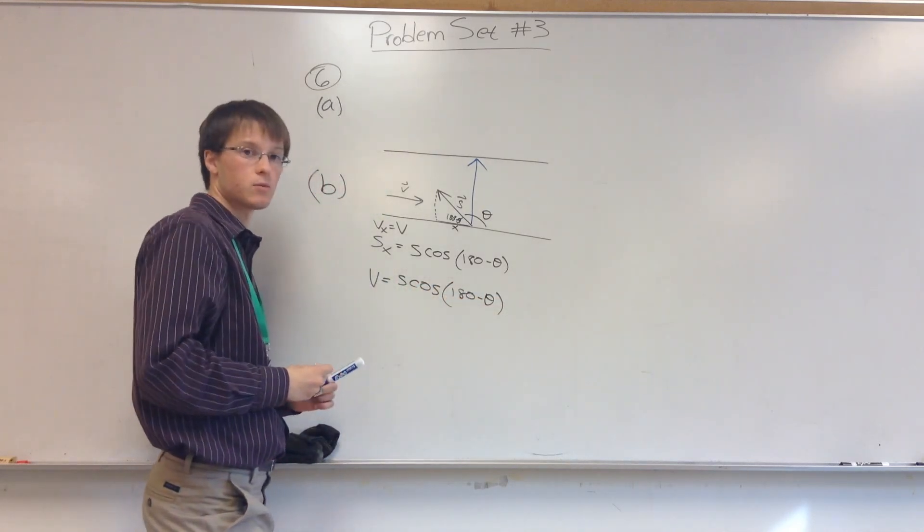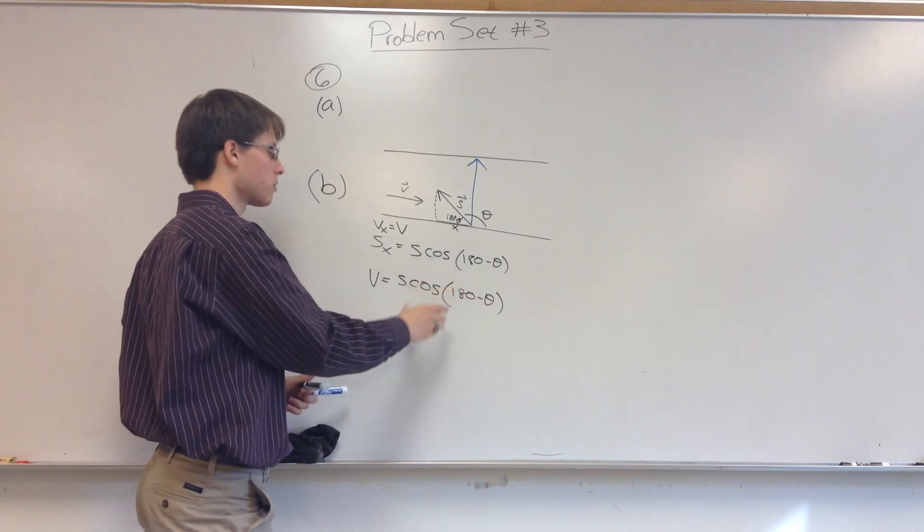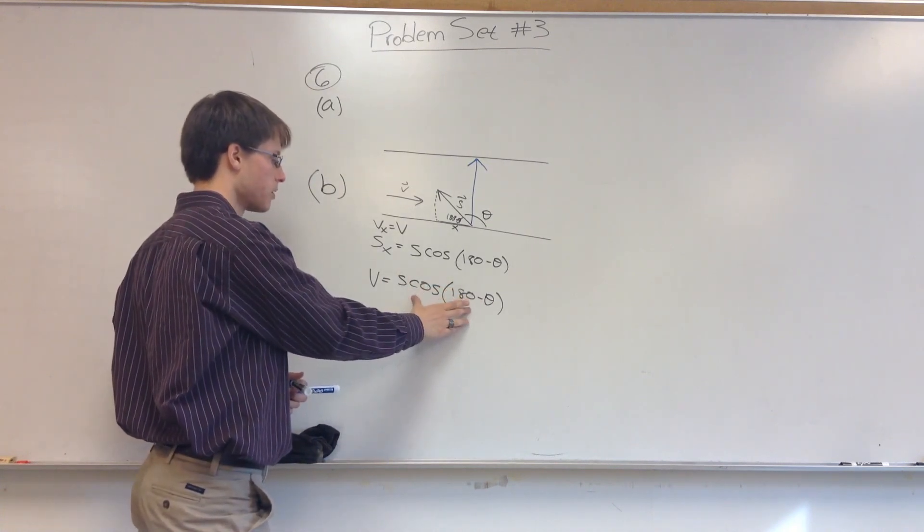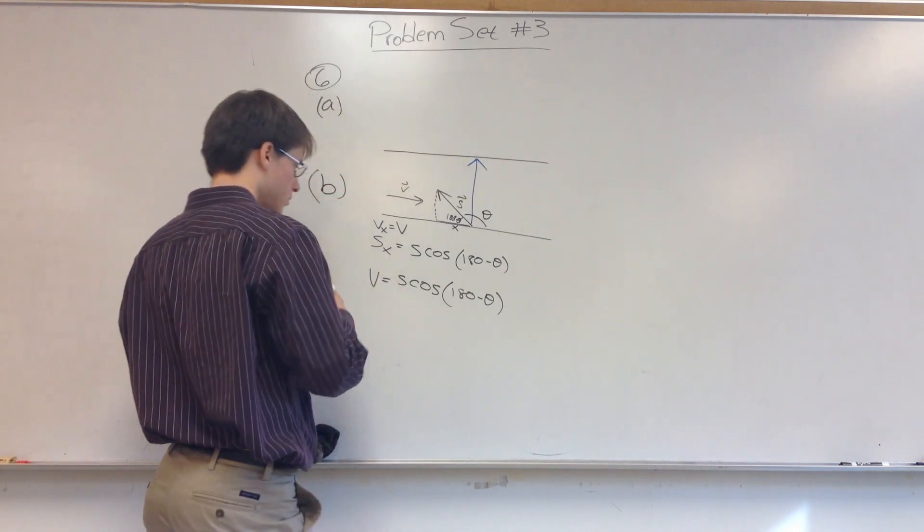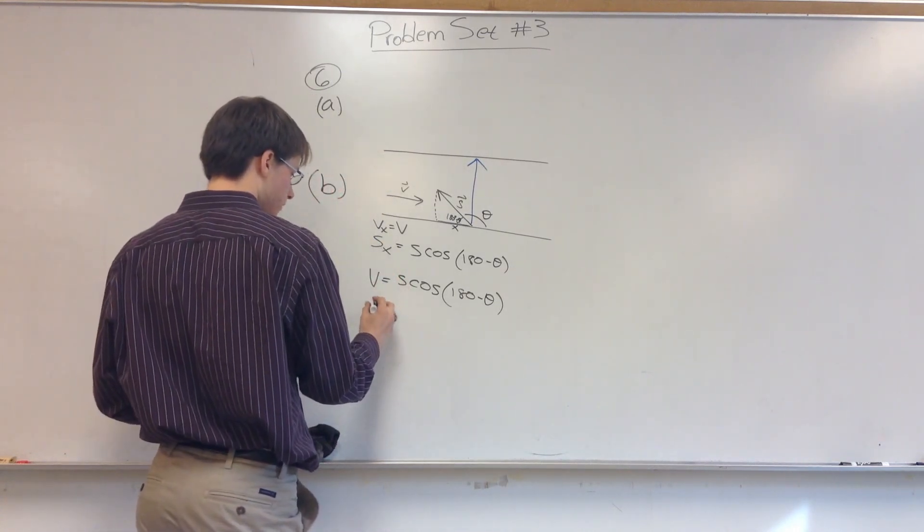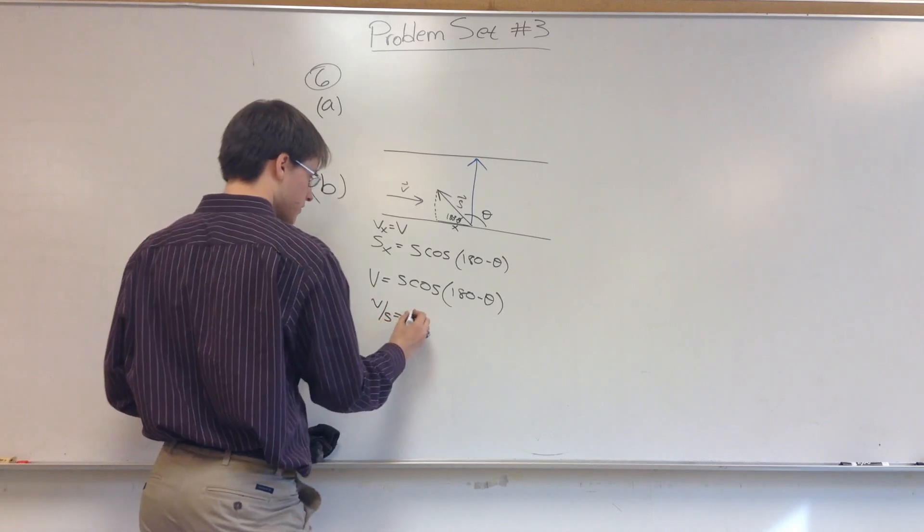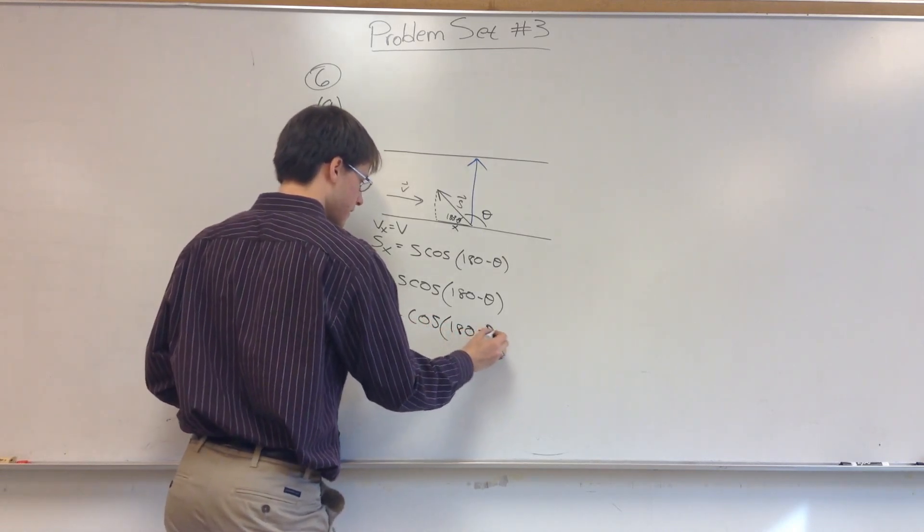What angle will give it, what angle will produce an X component that is equal to the X component of velocity, but canceling it out? So we're going to divide by S. So we have V divided by S is equal to the cosine of 180 minus theta.